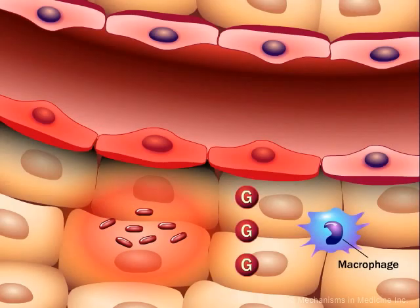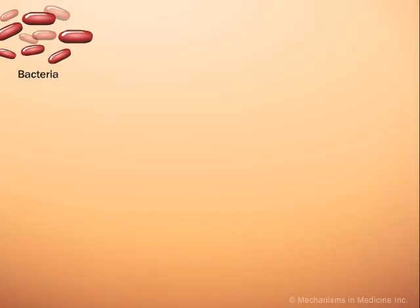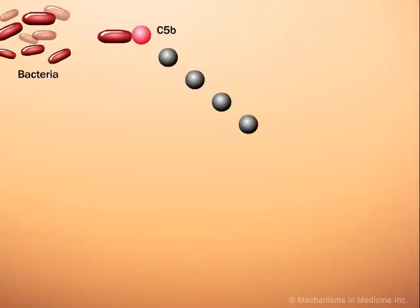However, hyperglycemia results in decreased activation of macrophages, thereby arresting the process of macrophage phagocytosis of bacteria. In addition to affecting neutrophil and macrophage function, hyperglycemia also affects the complement cascade.